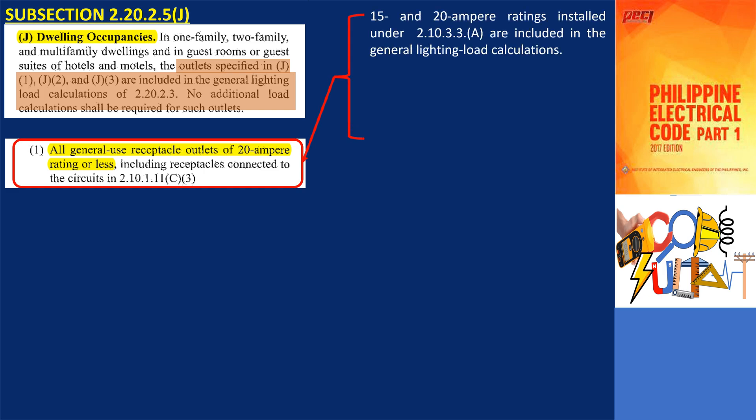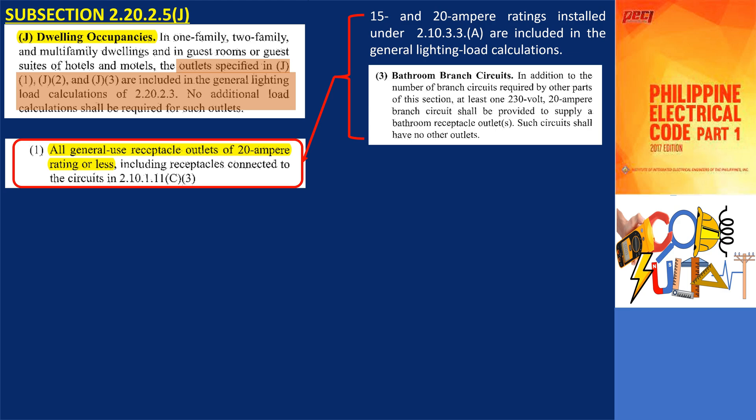General use receptacle outlets of 15 and 20A ratings installed in living rooms, bedrooms, library, den, sunroom, parlor, recreation room, and similar areas of dwelling units under 2.10.3.3a are included in the general lighting load calculations. Further, bathroom outlets in dwelling units are also included in general lighting load calculations. In our sample project, these are in circuits 6, 7, and 8.